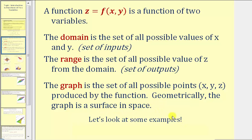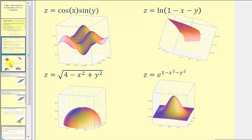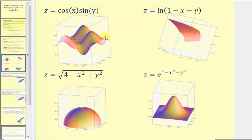Let's look at some examples. Here we have four functions of two variables. Notice how in each case, the graph is a surface in space. So we get some very interesting surfaces when we graph functions of two variables.